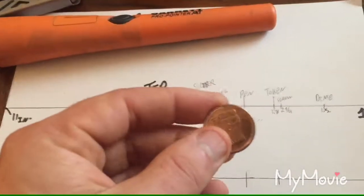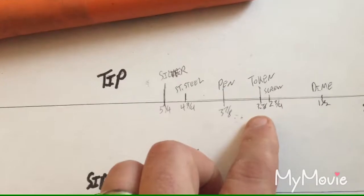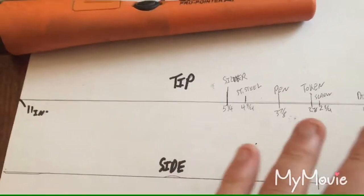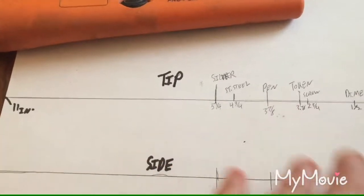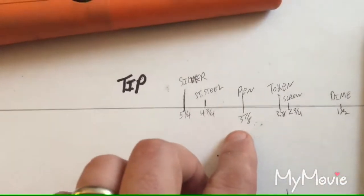It came in at, I can't read, two and seven eighths. My handwriting is messy and always will be messy, my apologies. The pen came in at three and seven eighths.